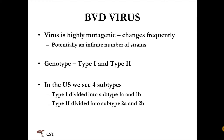BVD virus is a highly mutagenic virus, meaning that it changes frequently — with about every viral replication it changes. So potentially we have an infinite number of strains. We have it classified into genotypes, and in the U.S. we see two genotypes: type 1 and type 2. These are further subdivided into subtypes. There are four subtypes in the U.S.: under type 1 we see 1A and 1B, and under type 2 we see 2A and 2B.